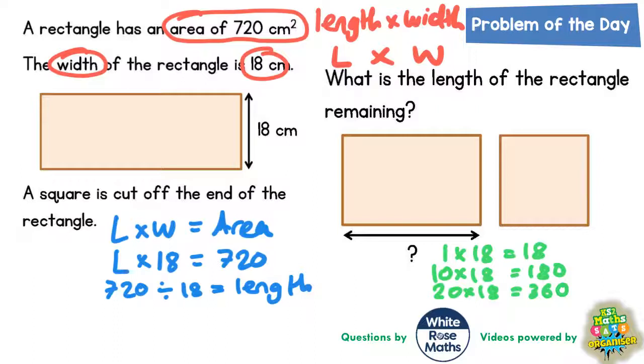Now if we double that again, double 20 lots is going to give us 40 lots of 18 and we would have to double the 360. So double 36 would be 72, put the 0 on the end, so 40 lots of 18 equals 720.